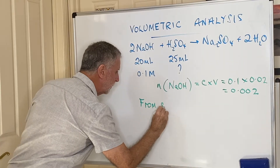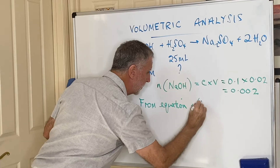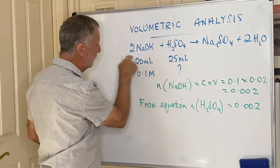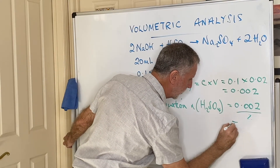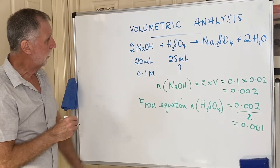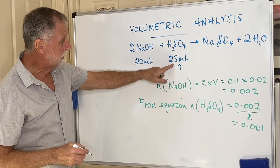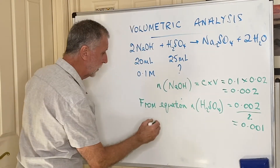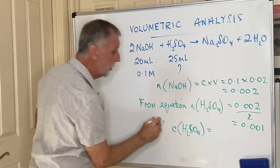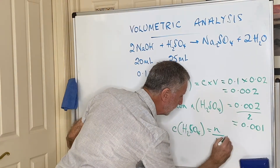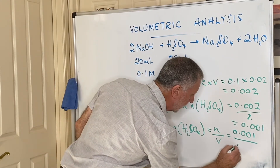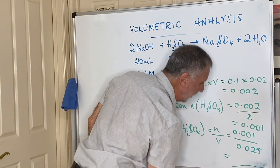From the equation, the ratio of NaOH to H₂SO₄ is 2:1, so the number of moles of sulfuric acid is 0.002 ÷ 2 = 0.001 moles. We know the volume of sulfuric acid is 25 mL. Concentration equals moles divided by volume: 0.001 ÷ 0.025 L. Pop that into a calculator to get the concentration.